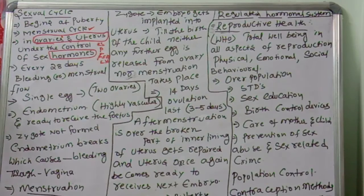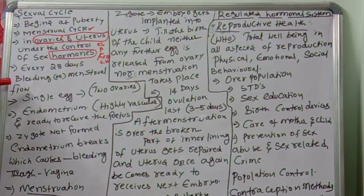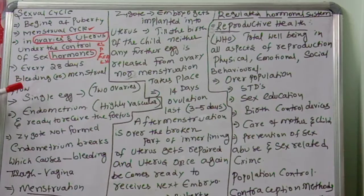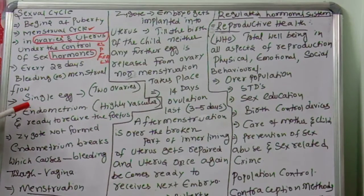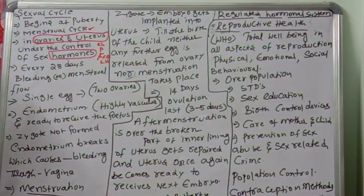Every 28 days there will be bleeding, called menstrual flow. A single egg is released from either of the two ovaries — left or right — every 28 days. If the egg is not fertilized, it comes out through the bleeding and menstrual flow takes place. Each ovary alternates in releasing one egg per month.